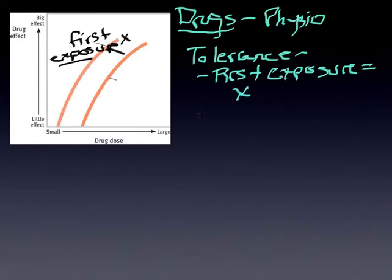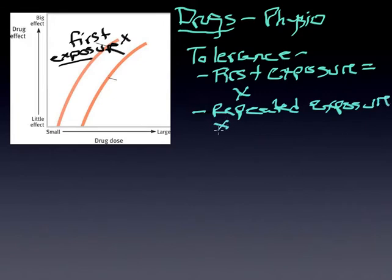After a while, what begins to happen is that with repeated exposure, the X effect—the first effect—begins to decrease. And the person doesn't get the desired pain relief.